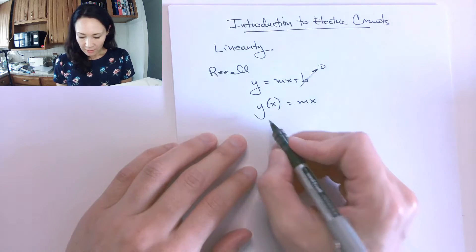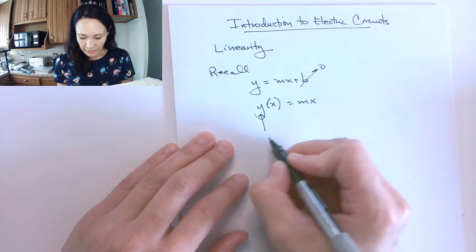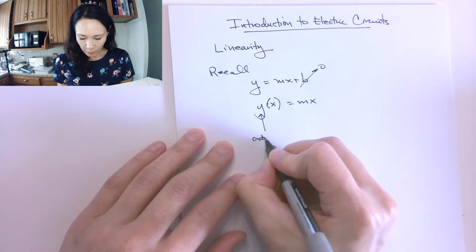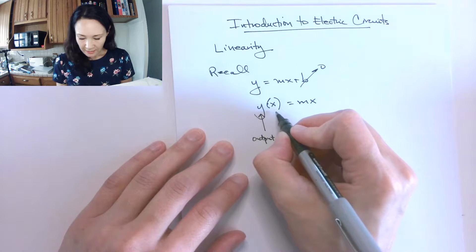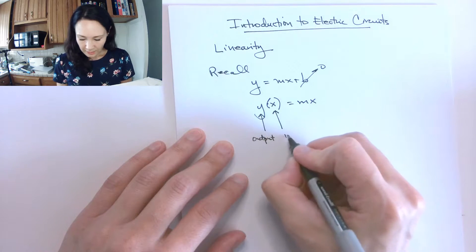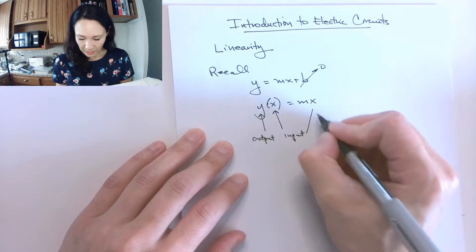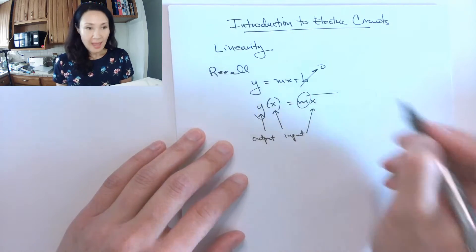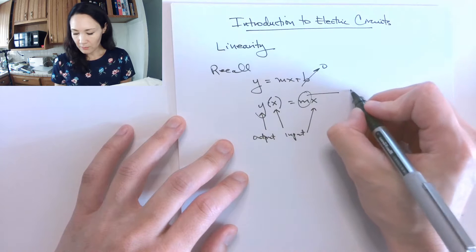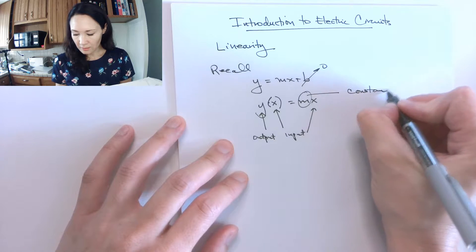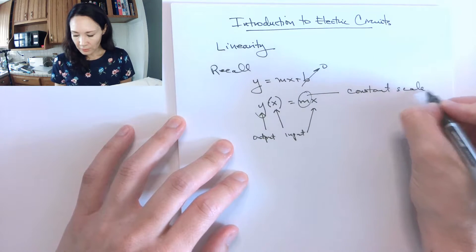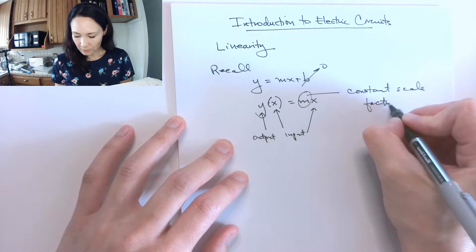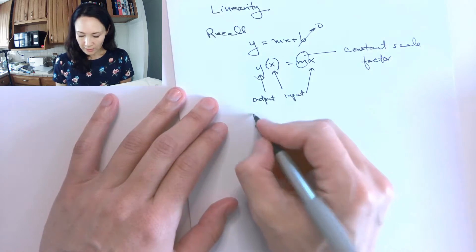So the parts of this are: this part here is the output, the x here is the input, and it also appears there. And then this m, this is going to be a constant scale factor. So you guys know this already.